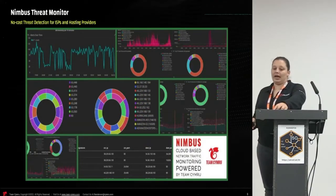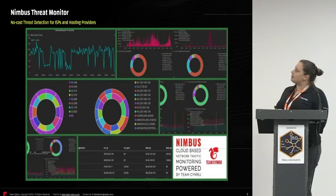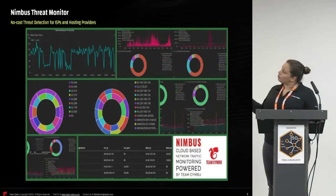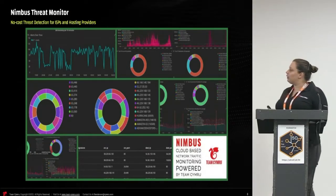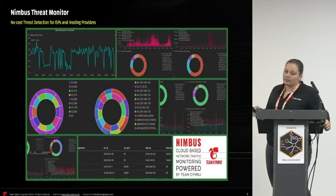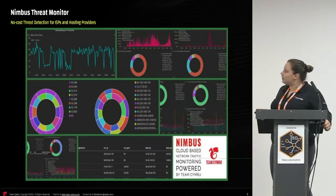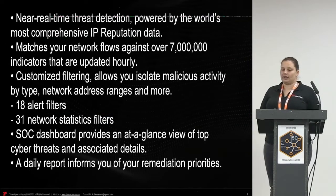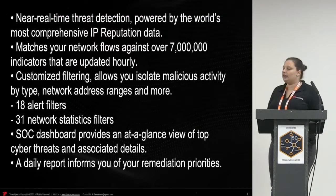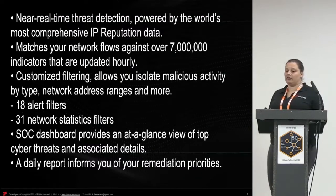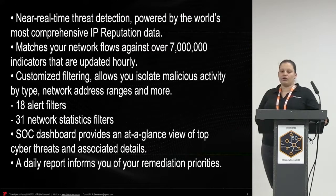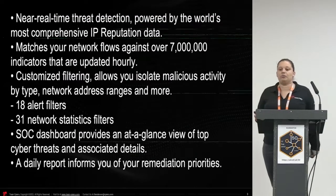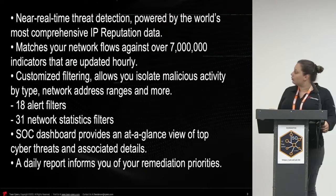The next community service we have is Nimbus. Nimbus contains the world's most comprehensive IP reputation data, and it offers a nice dashboard — as you can see in the picture. In this dashboard, we can view the top cyber threats and their associated details and filters. By using customized filtering, Nimbus allows you to isolate malicious activity by type, network, or address range. It has 18 alert filters and 31 network statistic filters, and it will match your network flows against over 7 million indicators that are updated hourly. On top of that, it will send a daily report and inform you about remediation priorities in your network.